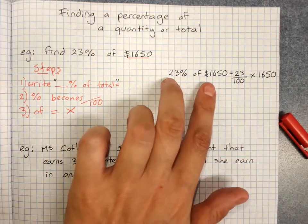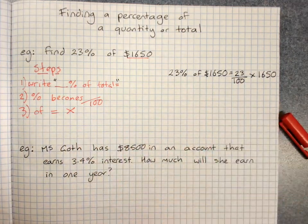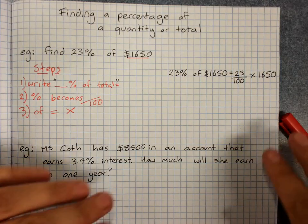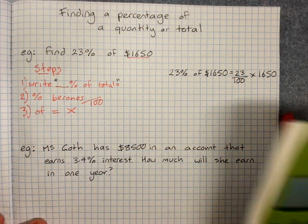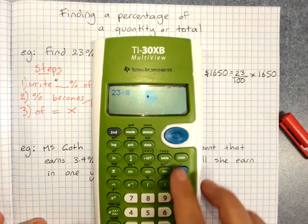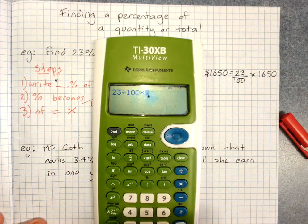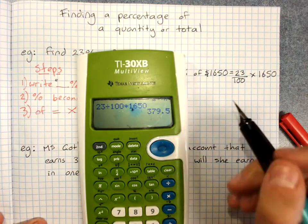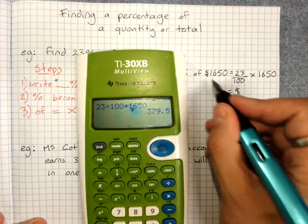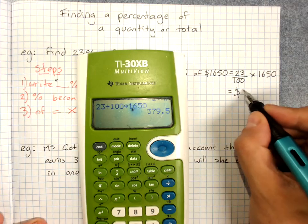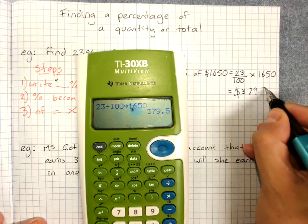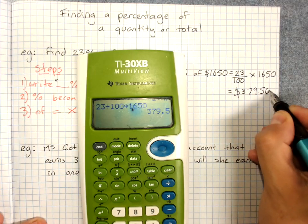So just by writing this out and rewriting it we get our working perfect to tell us what to do. 23 divided by a hundred times the total amount 1650. That is in money in dollars because it's money $379.50 and because it's money we need two decimal places.